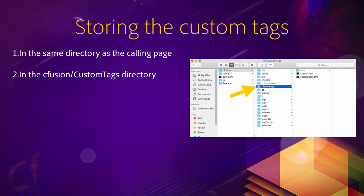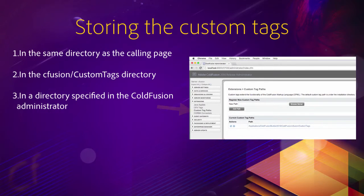Note that you can also store custom tags in subdirectories of that custom tag directory. You can also use any folder of your hard disk as a custom tags repository, but in that case you need to register that directory as a possible location for custom tags. You do that in the ColdFusion administrator using the custom tag path page in the extension category. The custom tags stored at those locations are also available to the entire ColdFusion server.